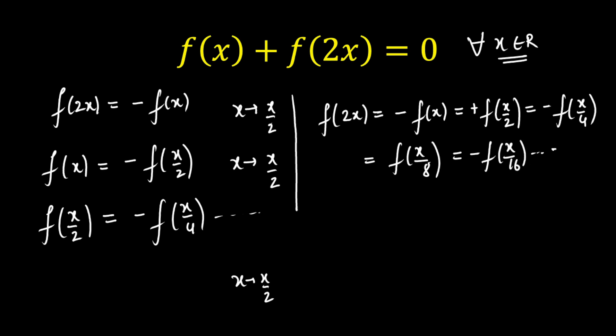And this sequence will go on, and the last term will be plus or minus f(x/2^n). Here, for the last term, n is tending towards infinity. If n is tending towards infinity, I can write f(x) as f(0).